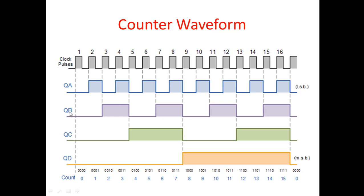If I take QB, for one period it takes two cycles in the original clock, and then two more for the next period — that is four time periods total. So F equals one divided by four time periods, meaning QB gives the frequency divided by four. Similarly, QC gives frequency divided by eight and QD gives frequency divided by 16. Based on the bit position, you can tell the division factor: the 0th bit divides by two, the next by four, and so on — you can directly divide the frequency by powers of two using different bit positions.